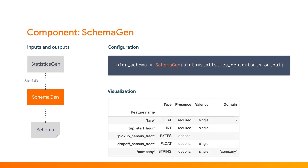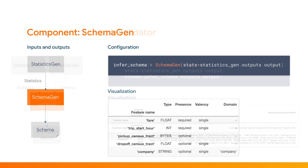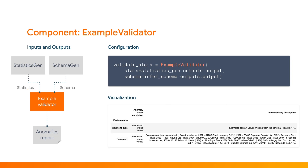Our next component, SchemaGen, also uses the TensorFlow Data Validation library. It looks at the statistics generated by StatisticsGen and tries to infer the types for each of our features, including the range of categories for categorical features. We can adjust the schema as needed, like adding new categories that we expect to see. Our next component, ExampleValidator, takes the statistics from StatisticsGen and the schema — which may be the output of SchemaGen or the results of user curation — and looks for problems: anomalies, missing values, or values that don't match our schema, and produces a report of what it finds.